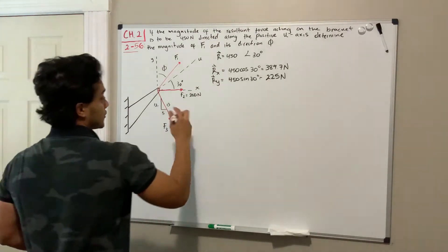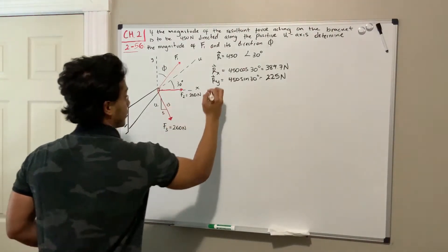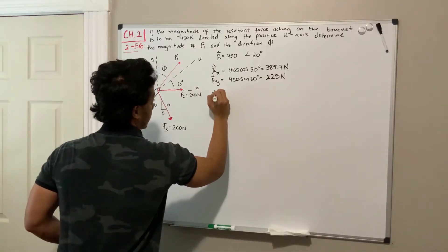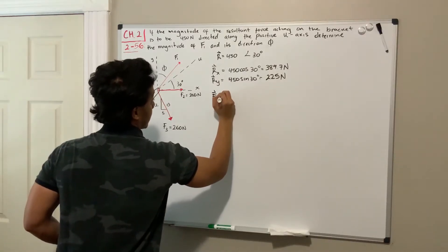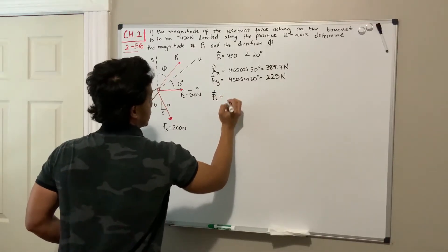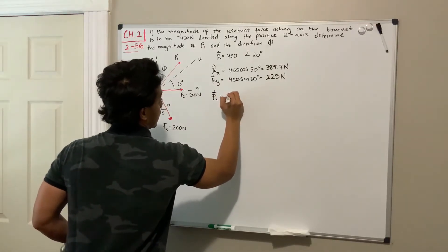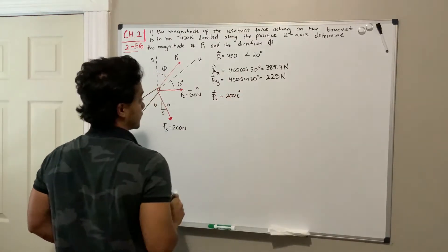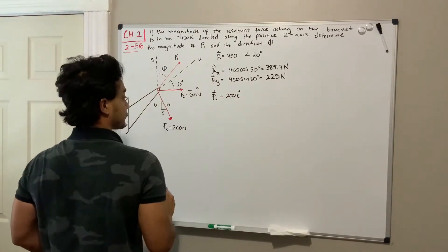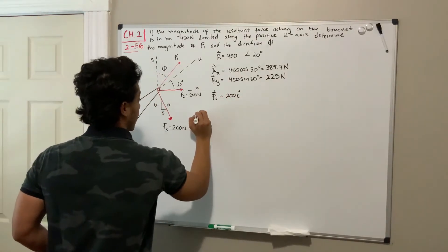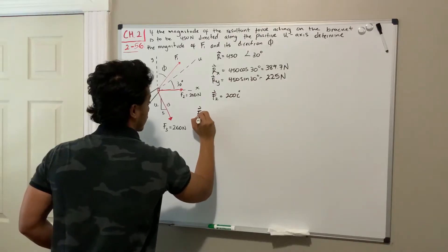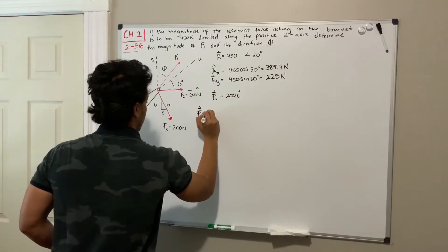The first one, F2, which is the easiest one — F2 is going to be 200 newtons all in the x-direction. For F3, we're gonna do a little bit more work.